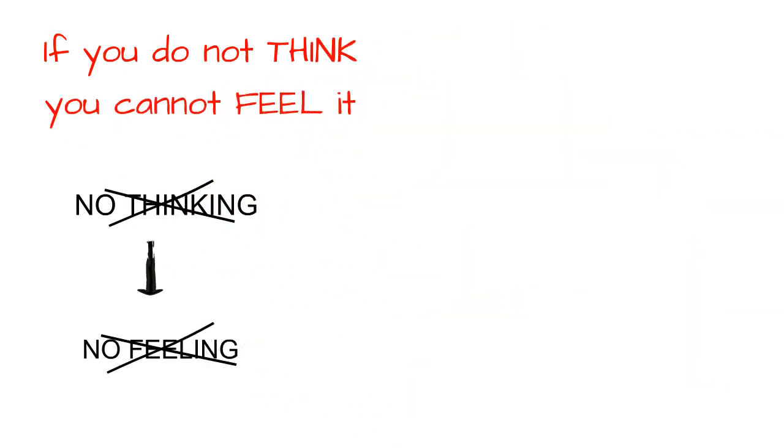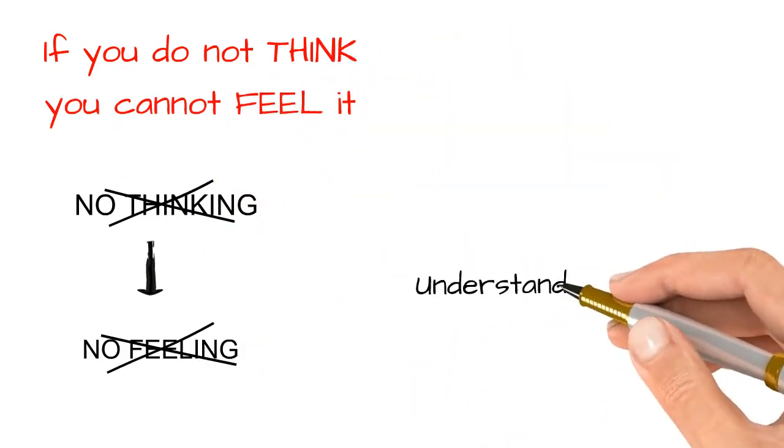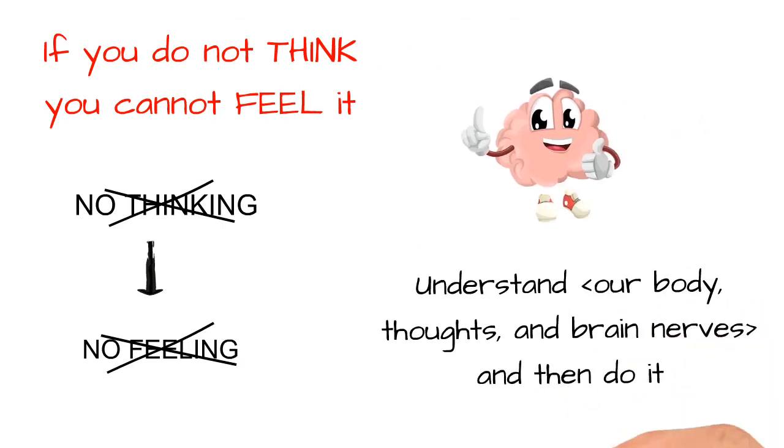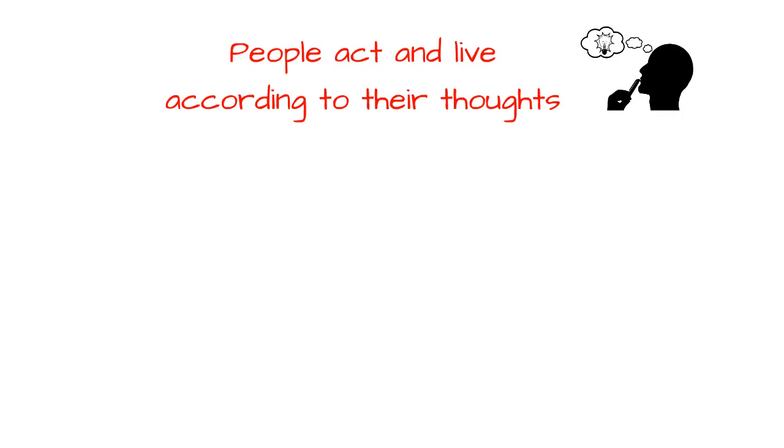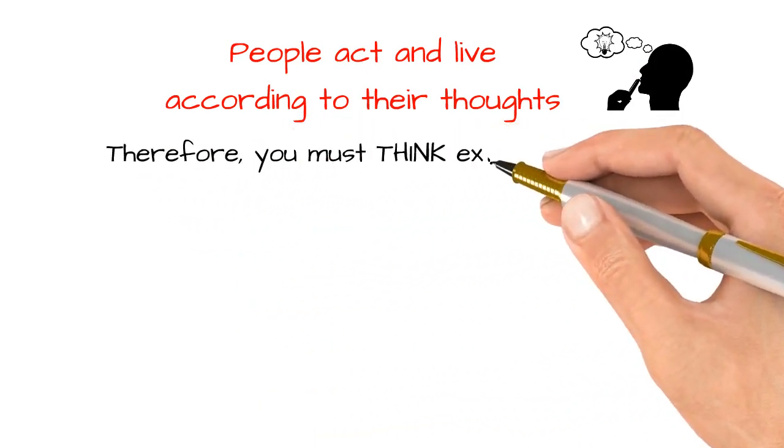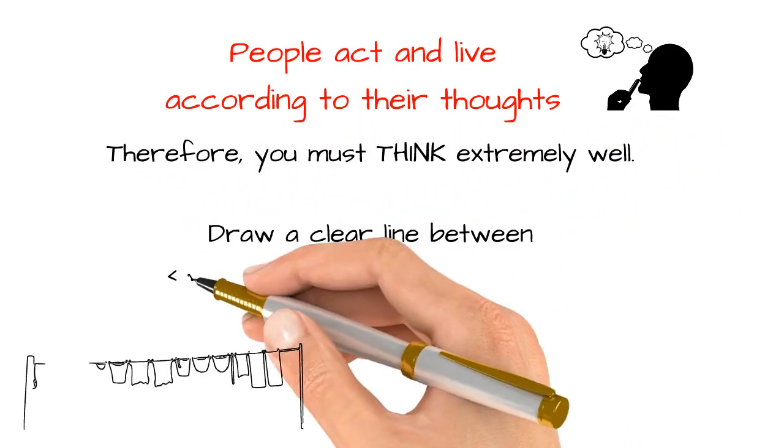So we have to understand our body, thoughts, and brain nerves, and then do it. People act and live according to their thoughts. Therefore, you must think extremely well. Draw a clear line between what you need to abstain from and what you need to act on.